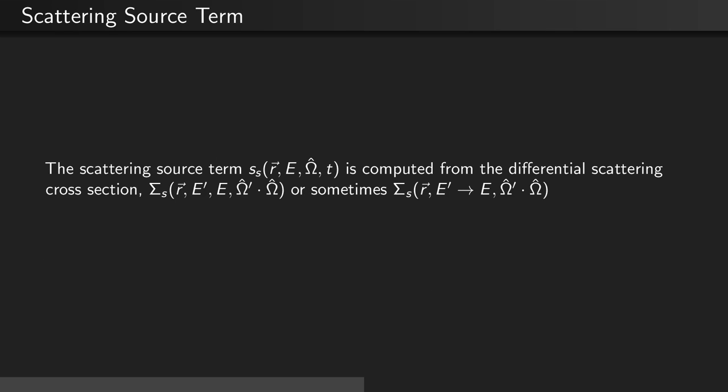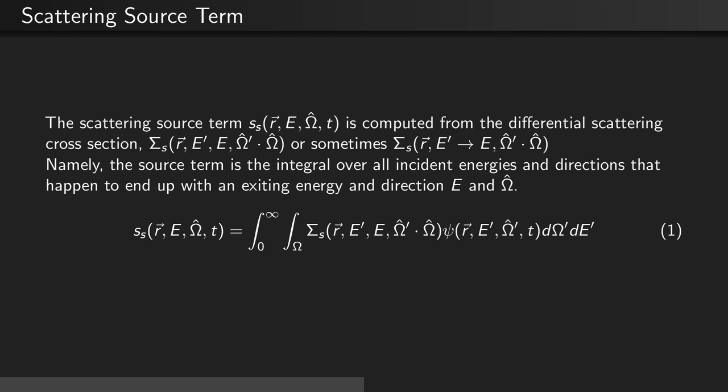The scattering neutron source, however, is computed from the differential scattering cross-section, which we saw earlier in the course. We represent this as big sigma sub S, which is a function of the energy that the incident neutron has and the exiting neutron energy, as well as the difference in direction omega hat prime dot omega hat. Sometimes we also express this in an alternative format where we say that E prime goes to E. The scattering source term is the result of integrating over all incident energies and all incident directions. Therefore, S sub S is the integral from 0 to infinity with respect to dE prime and the integral over all omega with respect to d omega prime of the differential scattering cross-section times the angular flux for E prime and omega prime.